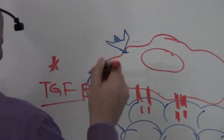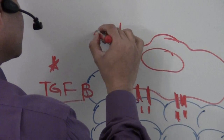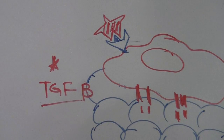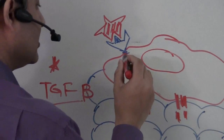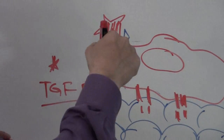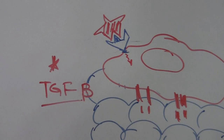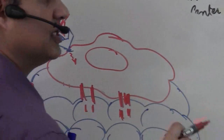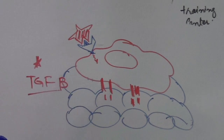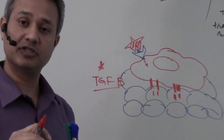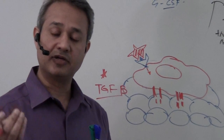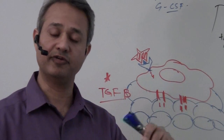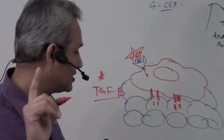TGF-beta activates a messenger system inside the macrophage, which then causes downregulation of macrophage activities — downregulation of lysosomal enzyme production, downregulation of phagocytosis, and overall downregulation of macrophage activity. This is very important to remember.